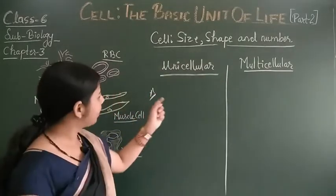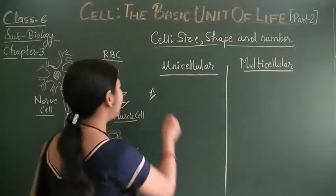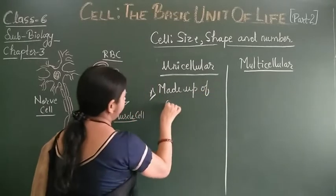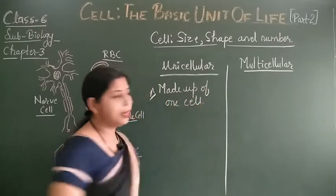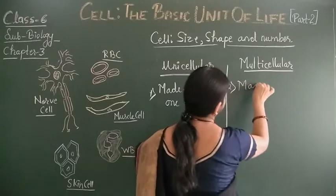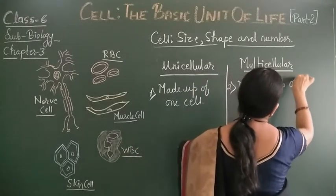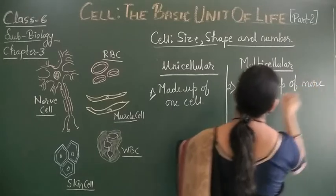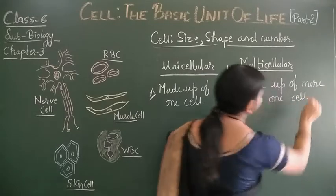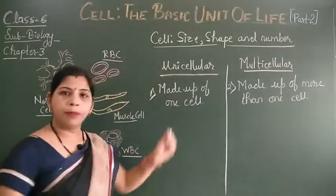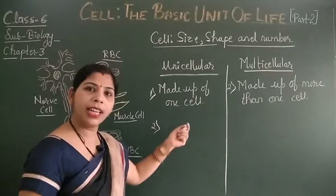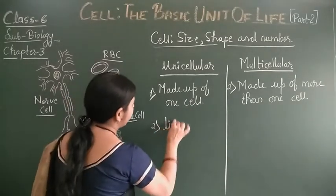Unicellular means made up of only one cell, while multicellular is made up of more than one cell. Because a unicellular organism is made up of only one cell, its whole body function is performed by that one cell, and its life span is short.